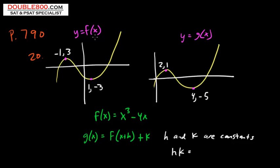We are given two functions, y equals f of x, and here is the graph, and y equals g of x, and here is the graph. We're also told that f of x equals x cubed minus 4x. Then it states that g of x, the function on the right, equals f of x plus h. This is the graph on the left, f, but then we have inside the brackets x plus h plus k. We're told that h and k are constants, and we want to find the product of h and k.